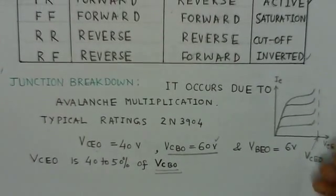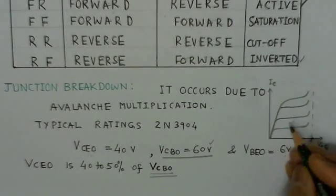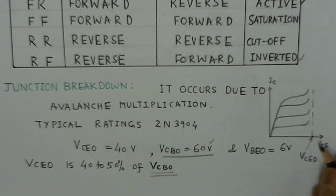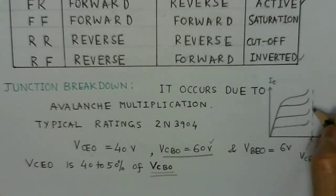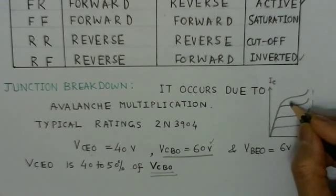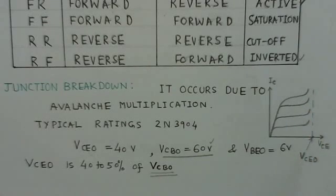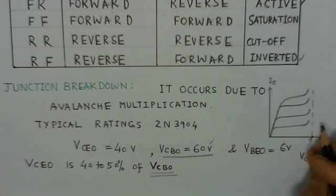Now the characteristics are shown here. For the breakdown region, this is the collector current and this is the VCE. VCEO, this is the collector-to-emitter breakdown. And so this collector current increases rapidly. So this is the breakdown region in these transistors.